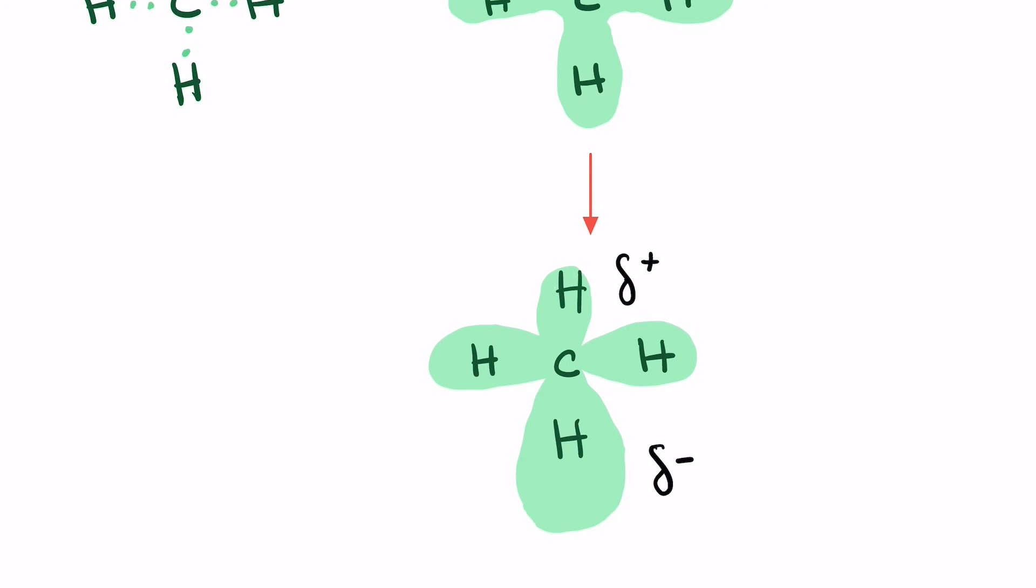This is what happens when the molecule is exhibiting London dispersion. A lot of the electrons have migrated to this hydrogen, making this side of the methane molecule electronegative and this side electropositive.